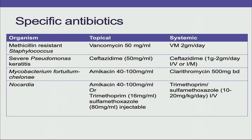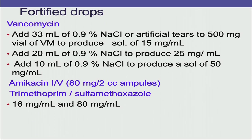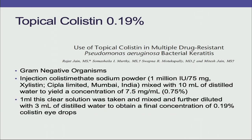In recalcitrant keratitis with MRSA, use vancomycin 5%. For severe pseudomonas keratitis, use ceftazidime. For mycobacterium, use fortified fluoroquinolones; for nocardia, amikacin can also be used. Methods for preparing fortified cefazoline 5% and tobramycin 1.3% are described, as well as vancomycin 5% and trimethoprim-sulfamethoxazole. Topical colistin 0.19% has been used for cases resistant to all commonly available antibacterials.